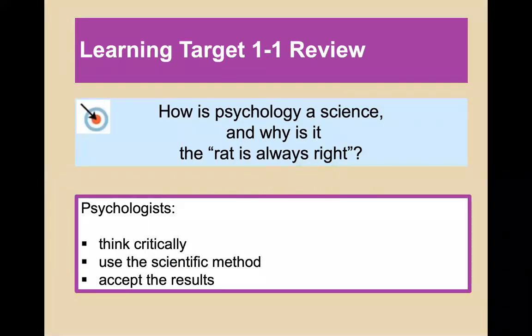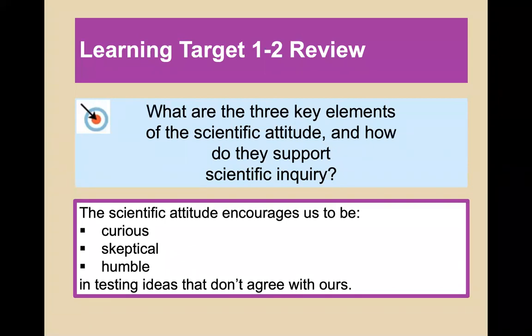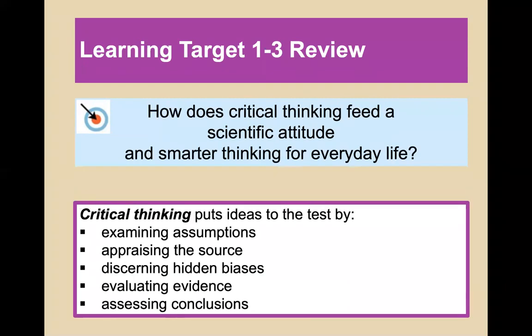At the end of module one, let's review. Psychology is a science because psychologists use the scientific method, think critically, and accept results even if they contradict their hypotheses. The scientific attitude encourages curiosity, skepticism, and humility. Critical thinking puts ideas to the test: we must examine assumptions, appraise the sources, discern hidden biases, evaluate evidence, and assess our conclusions.